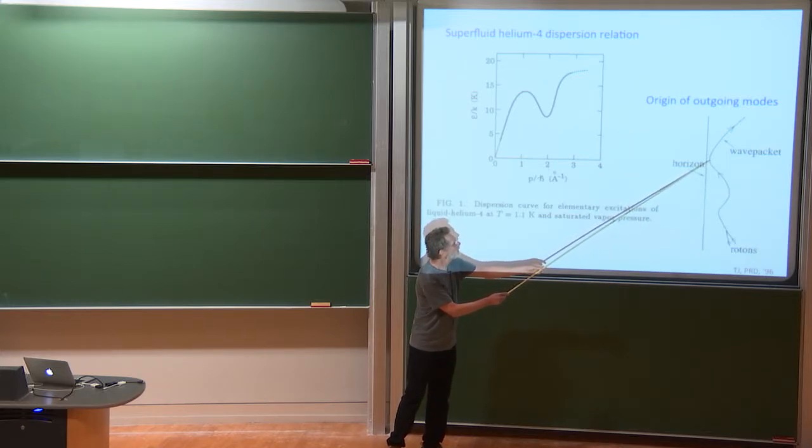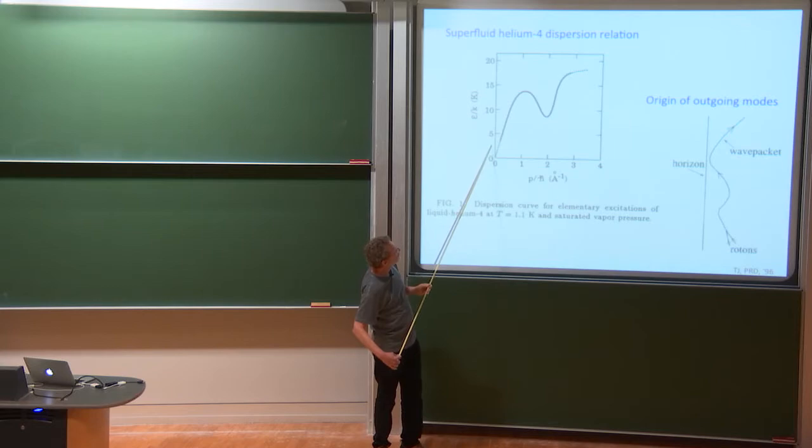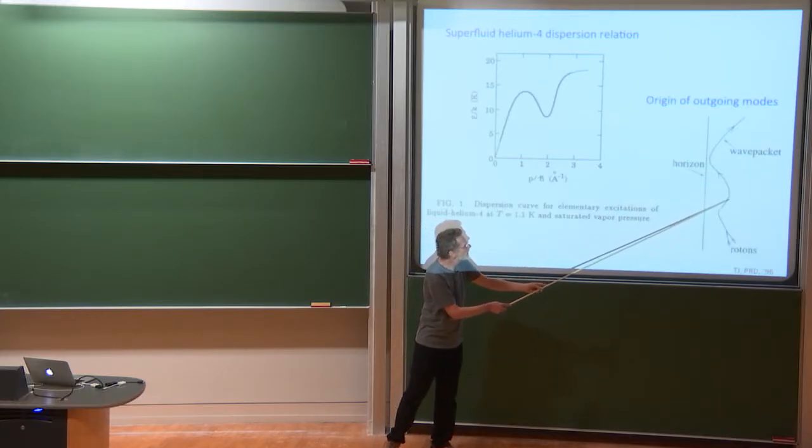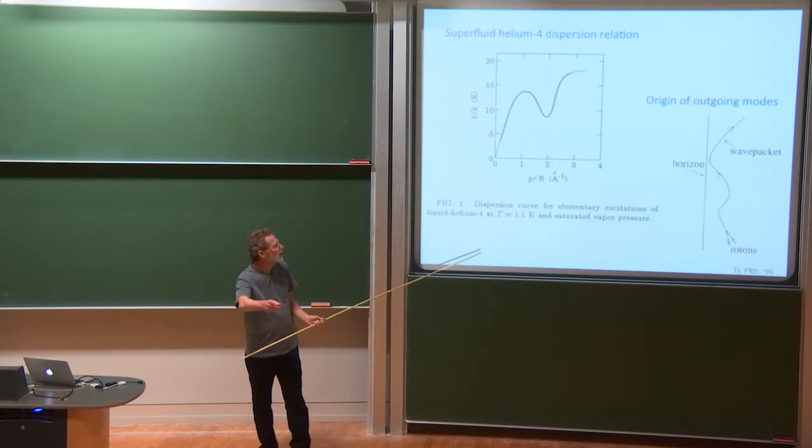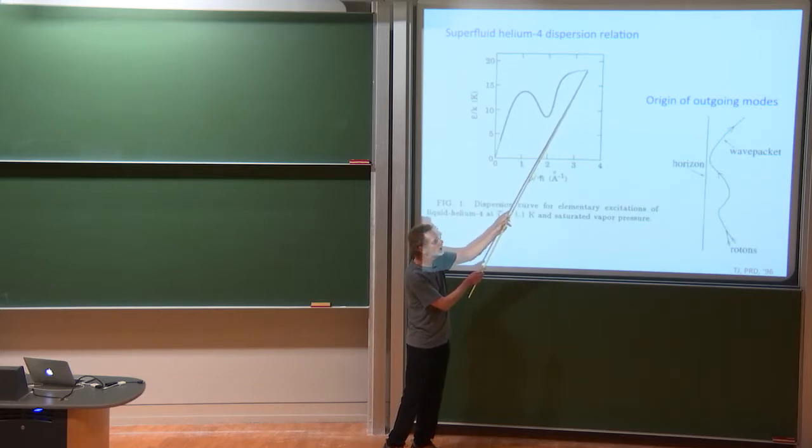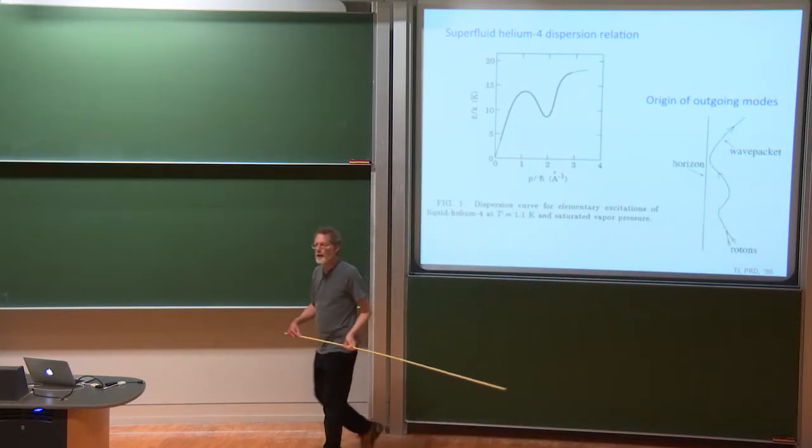And instead, it actually turns around at a turning point and goes further out. And that's what happens over, actually, it depends on the exact value of the frequency, but it goes over this hump and turns around. But because this has a couple of wiggles, in fact, you find that the precursor of the Hawking mode does this dancing outside the horizon.